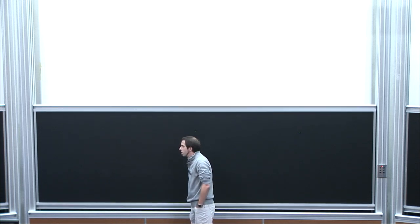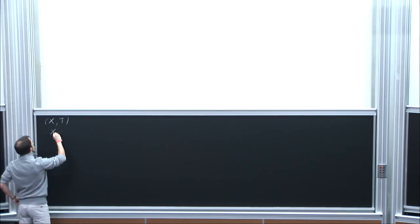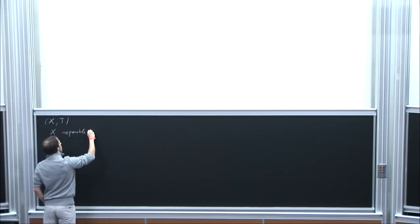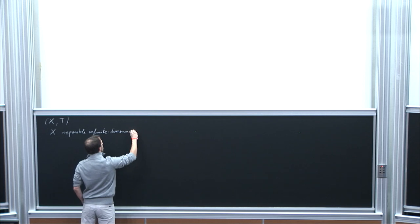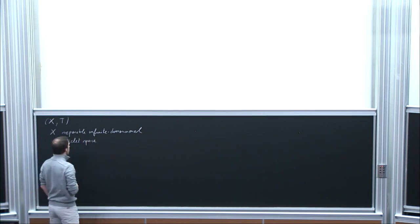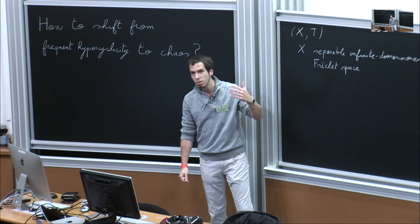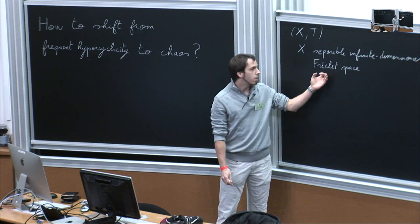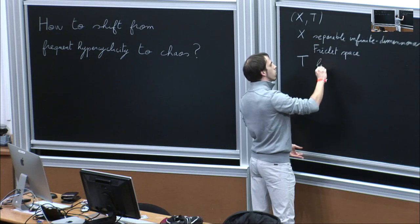In Linear Dynamics, the context is the following: you consider a pair (X, T), where X will be a separable, infinite-dimensional Fréchet space. A Fréchet space is a generalization of Banach spaces in the sense that it is still complete, but the topology can be given by a sequence of norms or even a sequence of semi-norms. And T will be a linear and continuous operator from X to X.